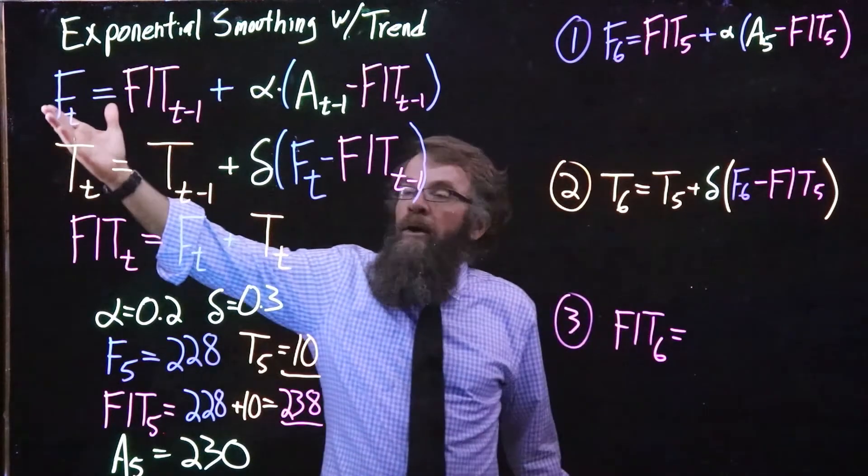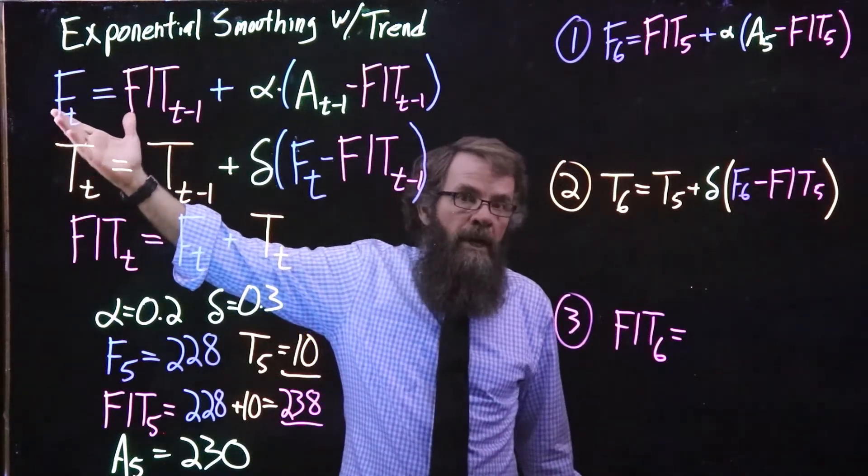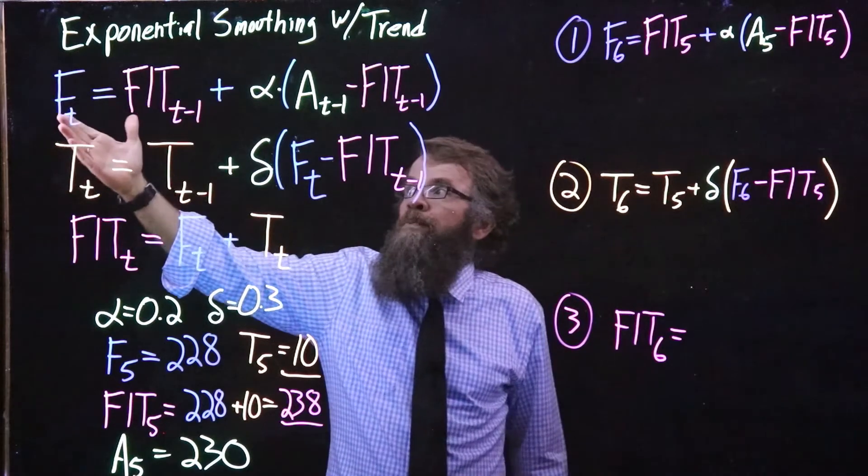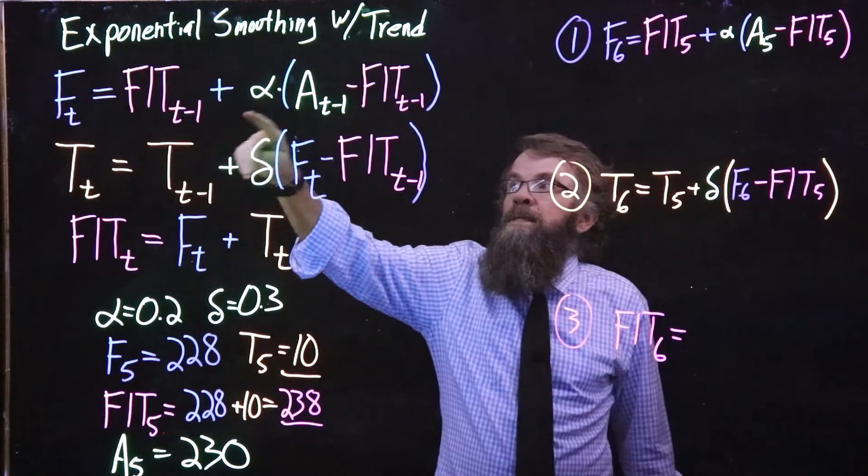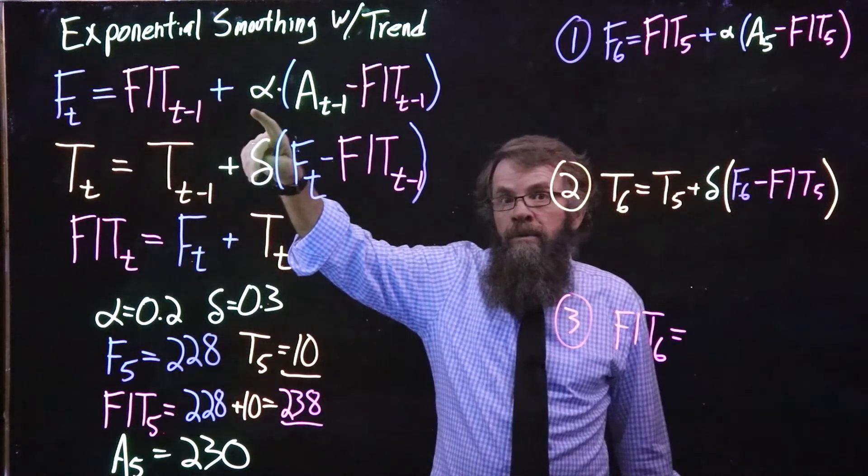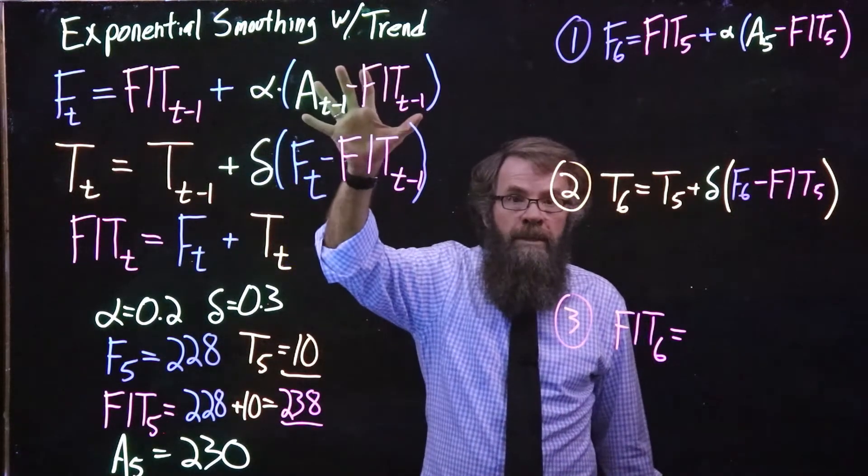So we start out, we calculate a new value F which I will refer to as the level, and it comes from the previous forecast including the trend from last period plus alpha, our smoothing constant for the level, times the error term from last time.